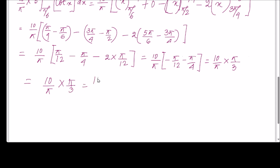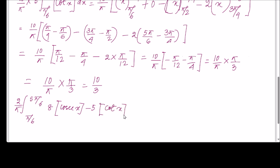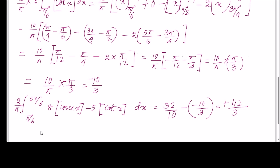So the full integral (2/π) ∫[π/6 to 5π/6] (8[cosec x] − 5[cot x]) dx equals 32/3 minus (−10/3) = 32/3 + 10/3 = 42/3 = 14. The answer is 14.